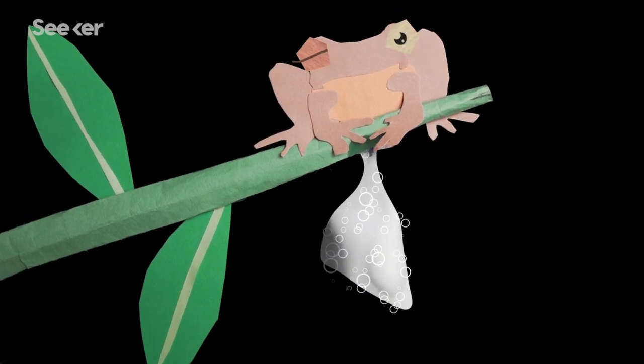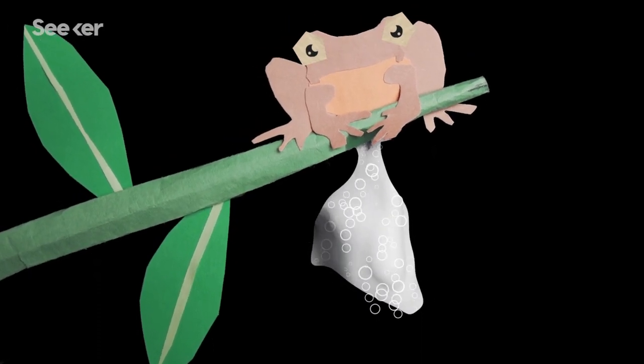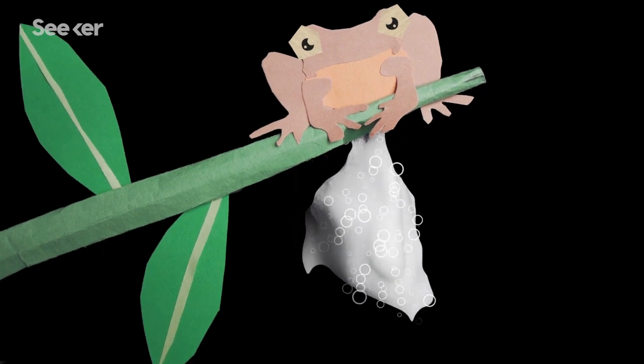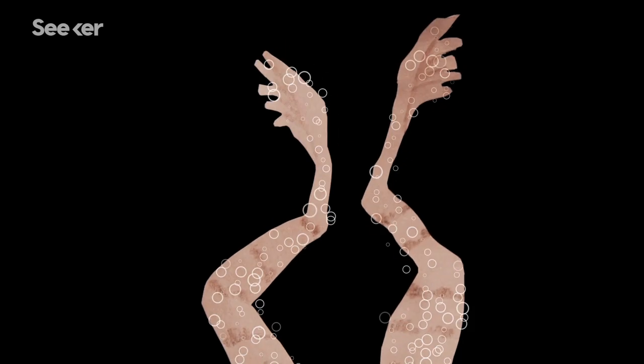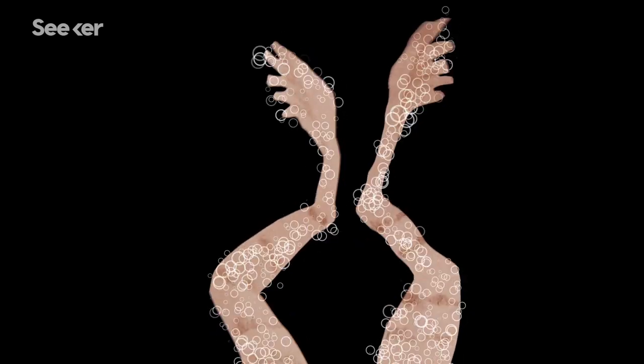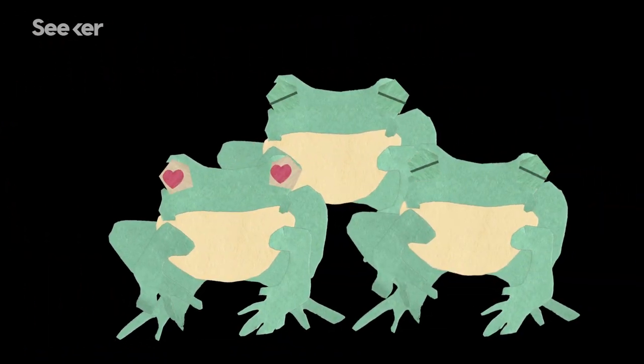Female foam-nesting tree frogs build frothy nests at the ends of tree branches that extend over small bodies of water. They do this by secreting a washery substance and whipping it up with their hind legs, which quickly gains the attention of nearby males.